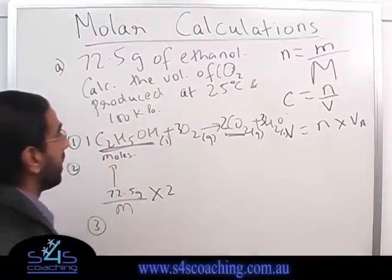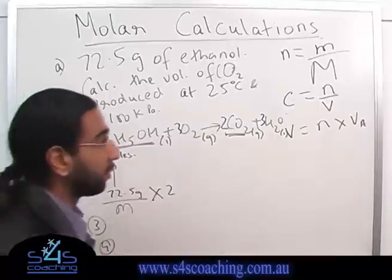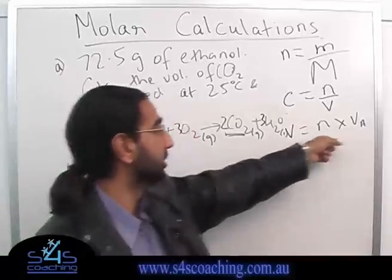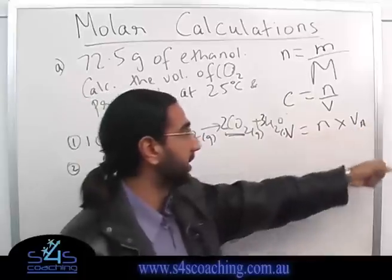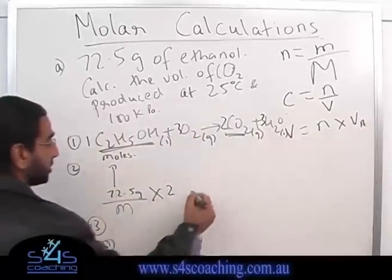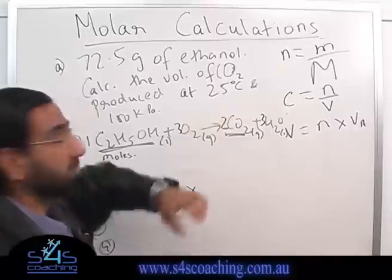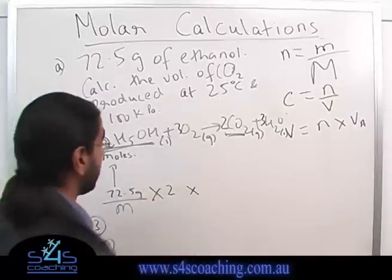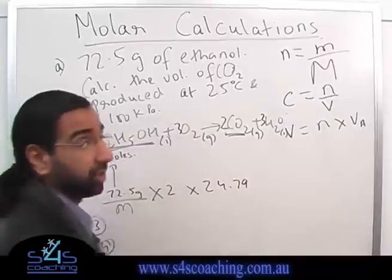And then, what do I need to do? I need to convert from moles to what I need. And what do I need? I need volume. And for that, I can actually use this equation over here. And volume is just equals to n times Va. And the number of moles is this much, and I have to times it by Va. And Va, you can read from the back of your data sheet, because it's at 25 degrees, it's 24.79. And you will get your answer.